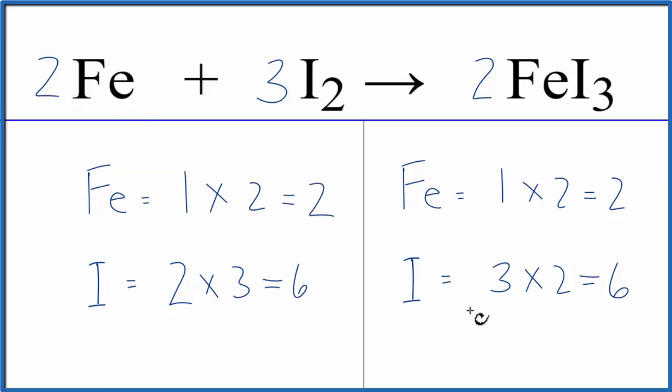So when you have an odd number, like we had 3 iodine atoms here, if you multiply it by 2, get it to an even number, that often makes the balancing a lot easier.